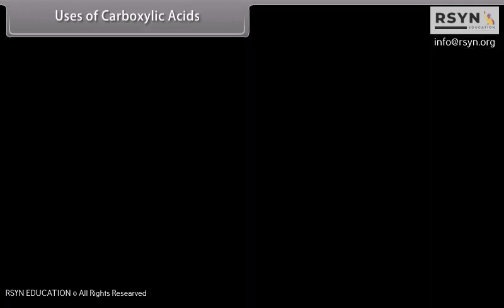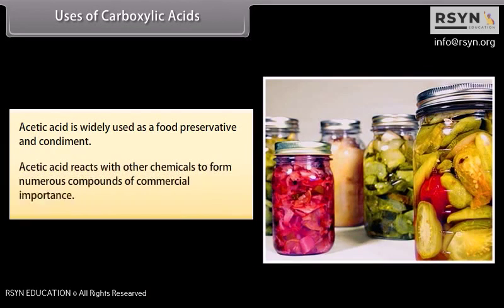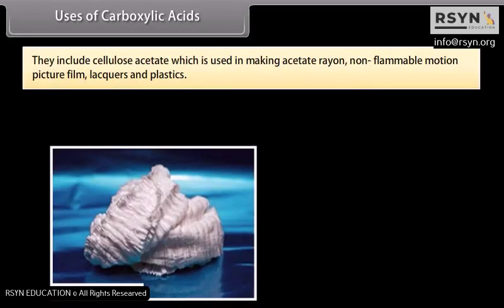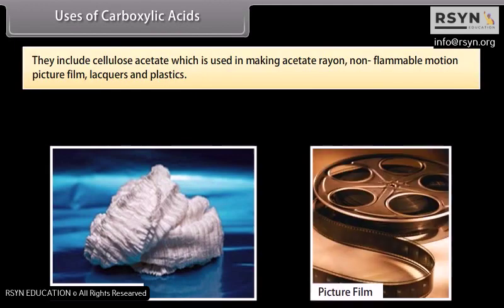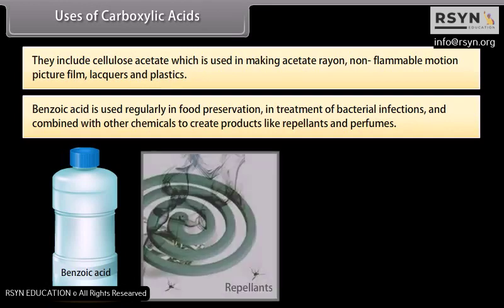Uses of carboxylic acids: acetic acid is widely used as a food preservative and condiment. Acetic acid reacts with other chemicals to form numerous compounds of commercial importance, including cellulose acetate, which is used in making acetate rayon, non-flammable motion picture film, lacquers, and plastics. Benzoic acid is used regularly in food preservation, in treatment of bacterial infections, and combined with other chemicals to create products like repellents and perfumes.